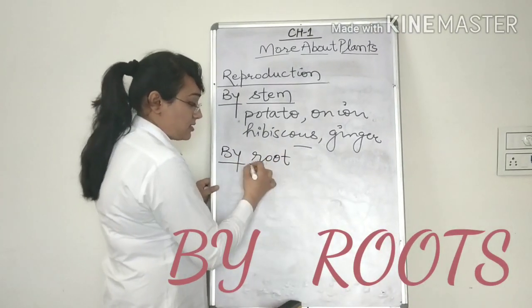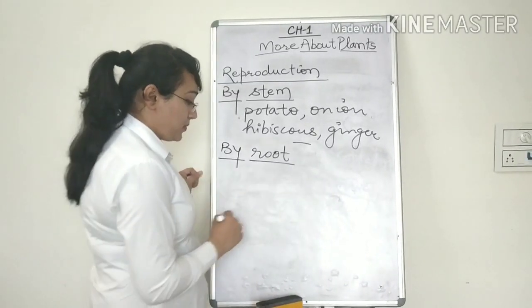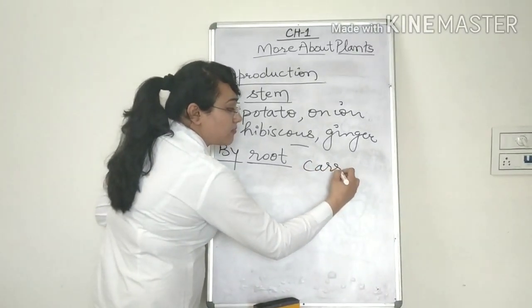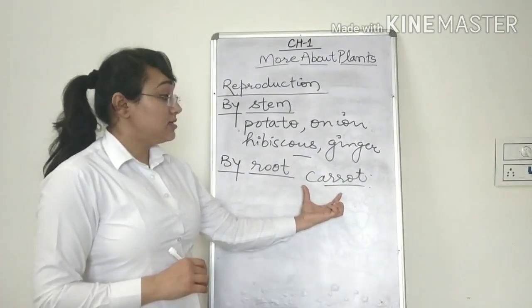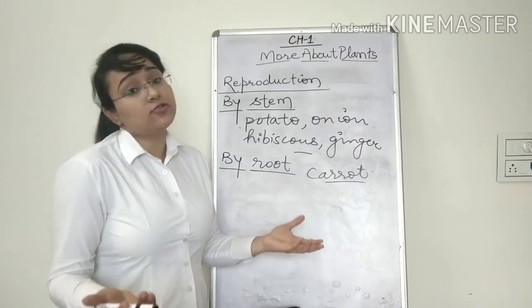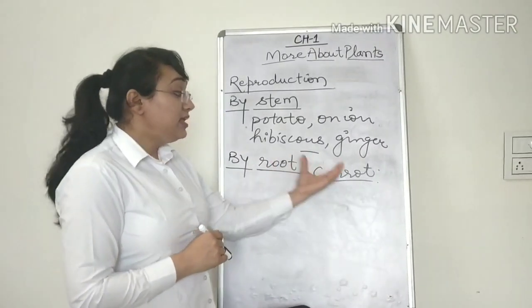Now there are some plants which can be reproduced by roots. Yes, you heard me right, by roots. For example, carrot. Carrot. Now carrot does not have seeds obviously, so we cannot grow it by that method.